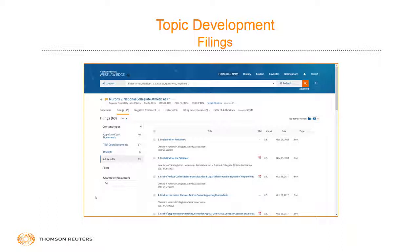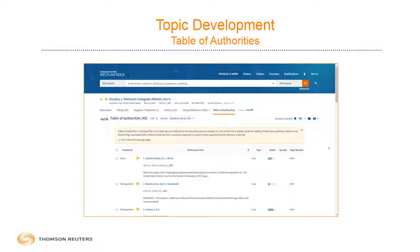The final link I wanted you to be aware of when writing your case note in particular is the Table of Authorities link. If you click Table of Authorities, it'll give you an alphabetical list of every case that your court relied upon when they wrote the decision. So that's something you should certainly do each and every time you retrieve a case that's going to be important, particularly for your case note.